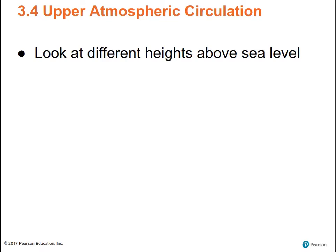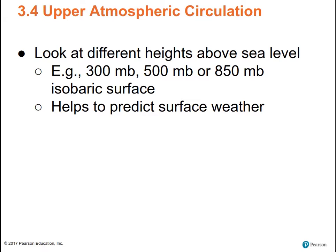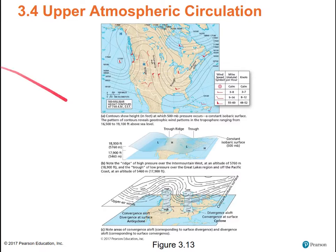In the upper atmosphere, things are very different. The winds are faster and not affected by friction. At 300 millibars — where roughly 70% of the molecules are underneath you — we're getting into the realm of the jet stream, about 10 kilometers above the ground, roughly 30,000 feet. Looking at the upper atmosphere helps us predict surface weather. Here we've got a typical upper atmosphere chart showing stronger winds with a steeper pressure gradient and weaker winds where there's a lesser pressure gradient.